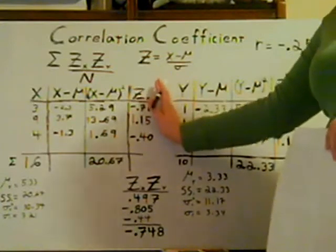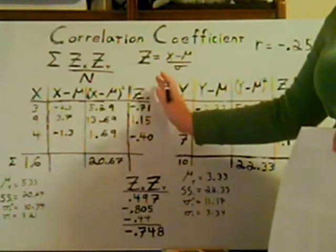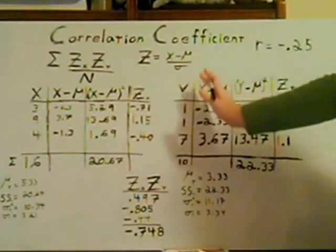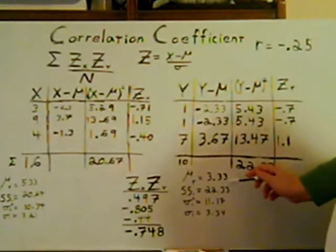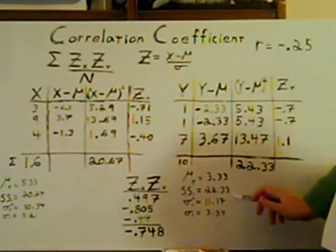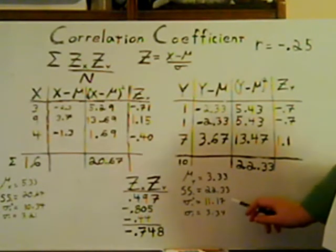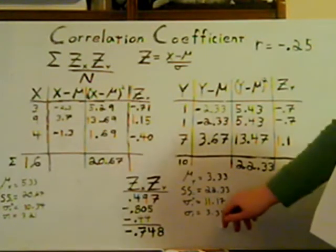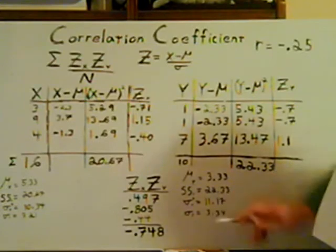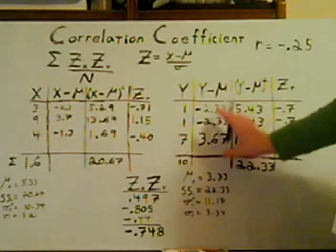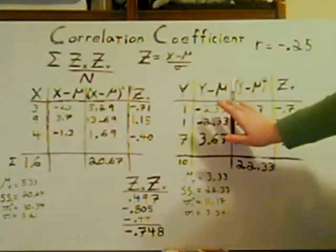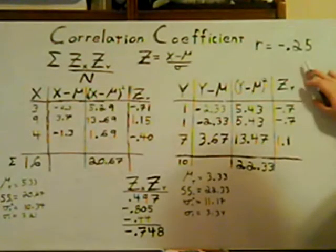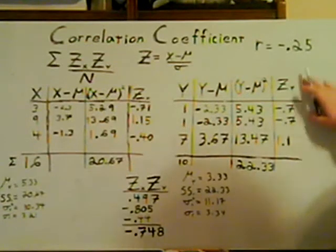Unfortunately, this is only half of the problem, because we only did one variable. So now we come over to y and do the exact same thing. We come up with a mu of 3.33, sum of squares of 22.33, a variance of 11.17, and a standard deviation of 3.34. We did all the same calculations and repeated them for y, including finding all the z-scores for y.